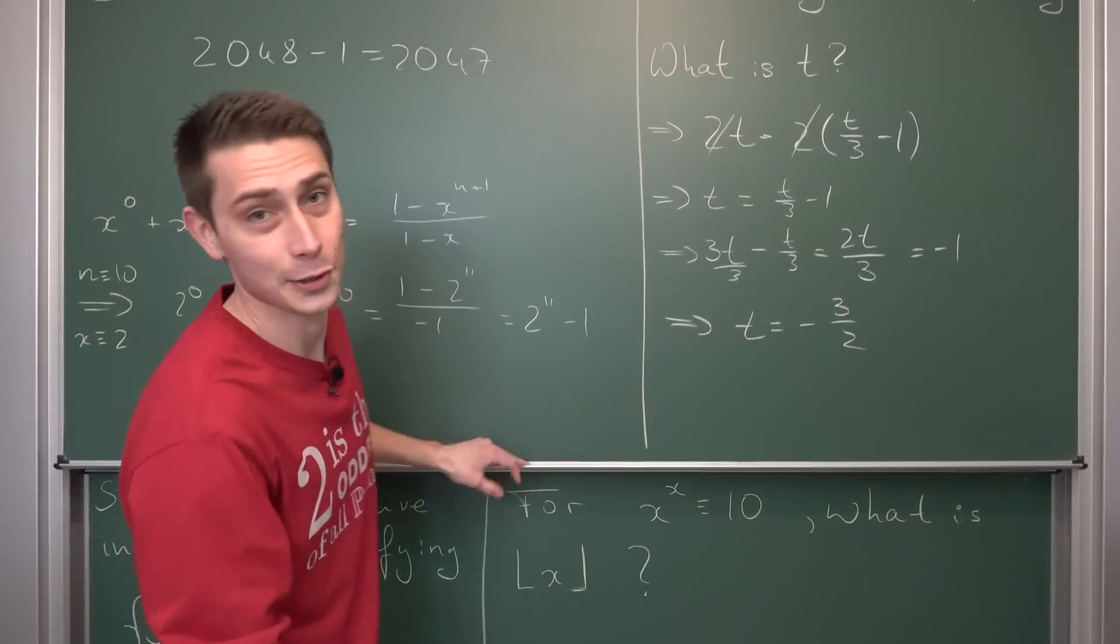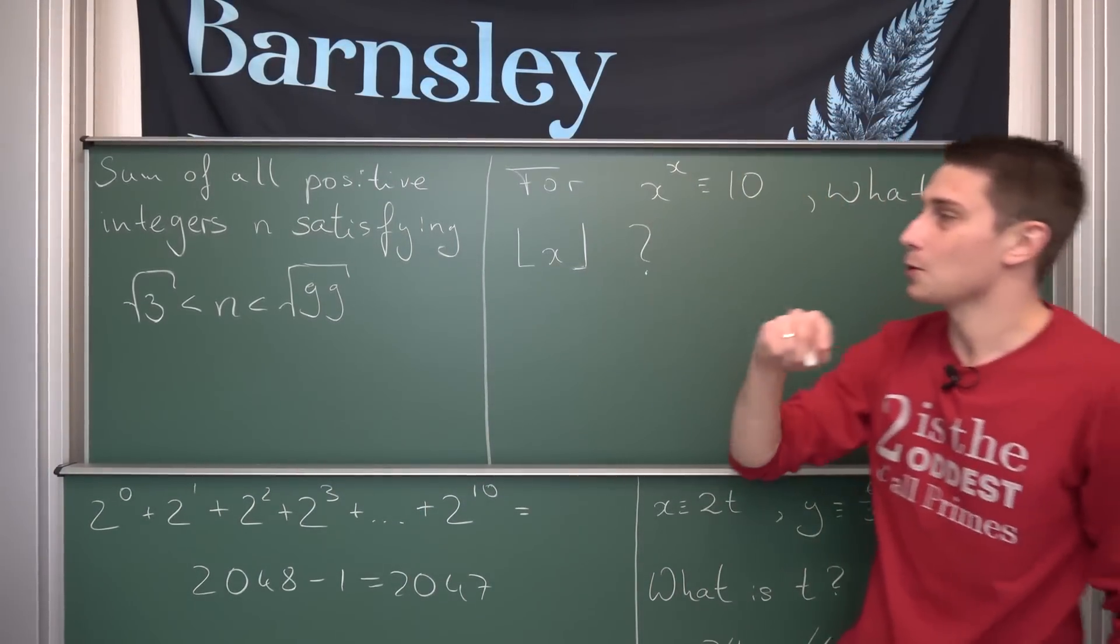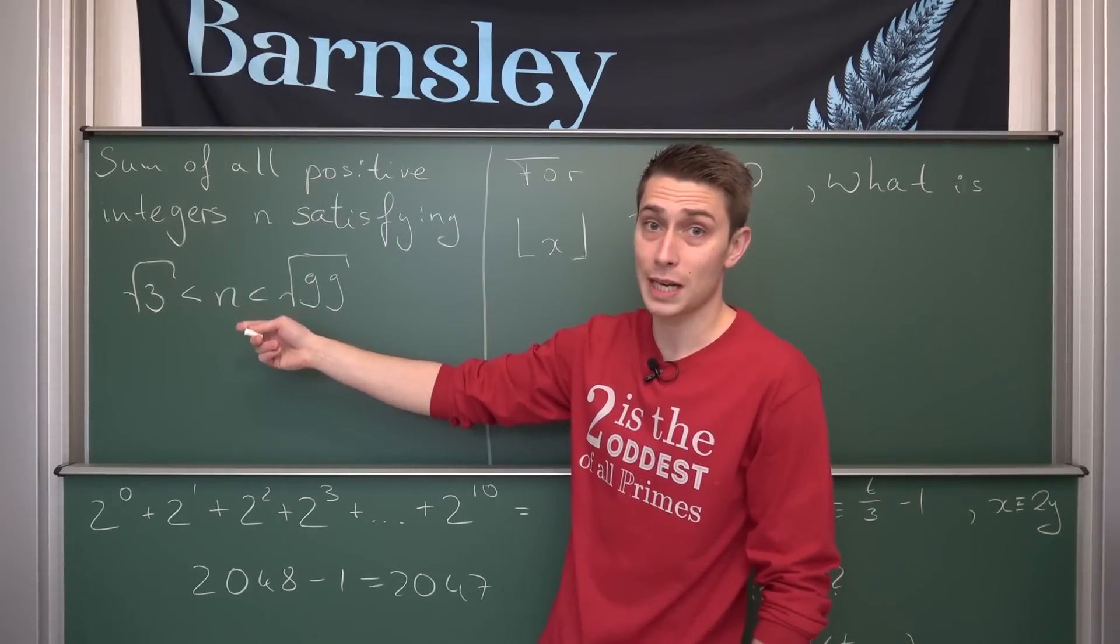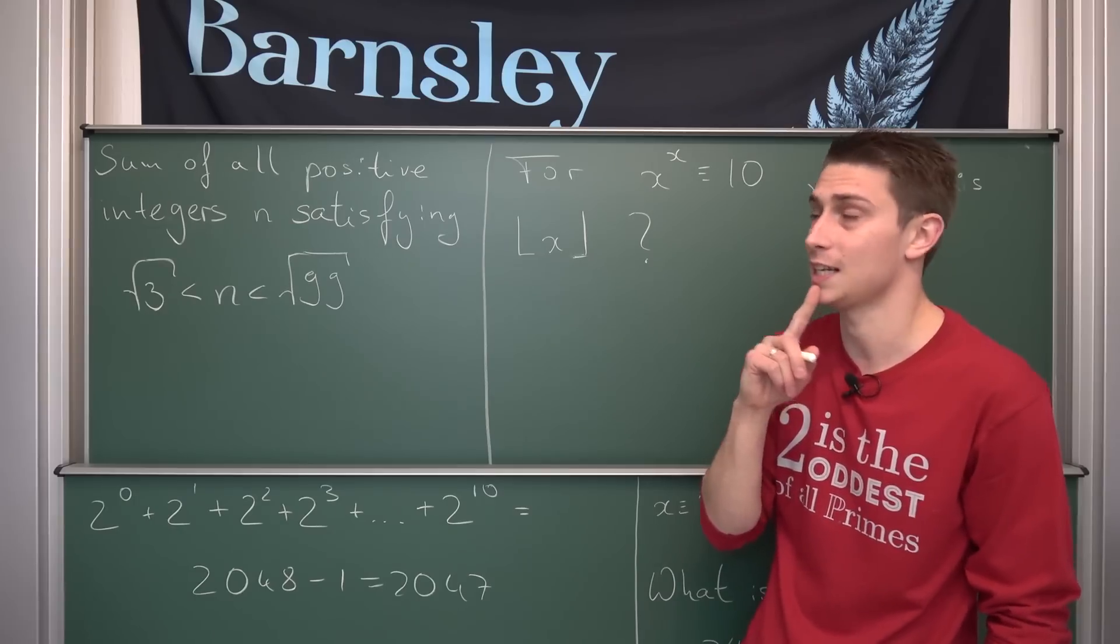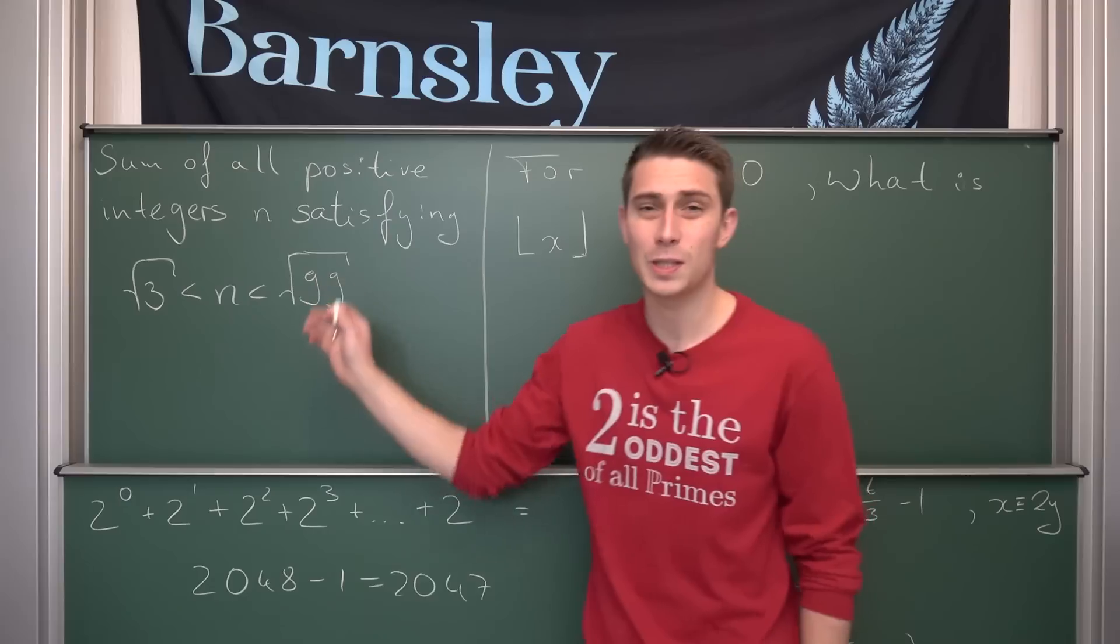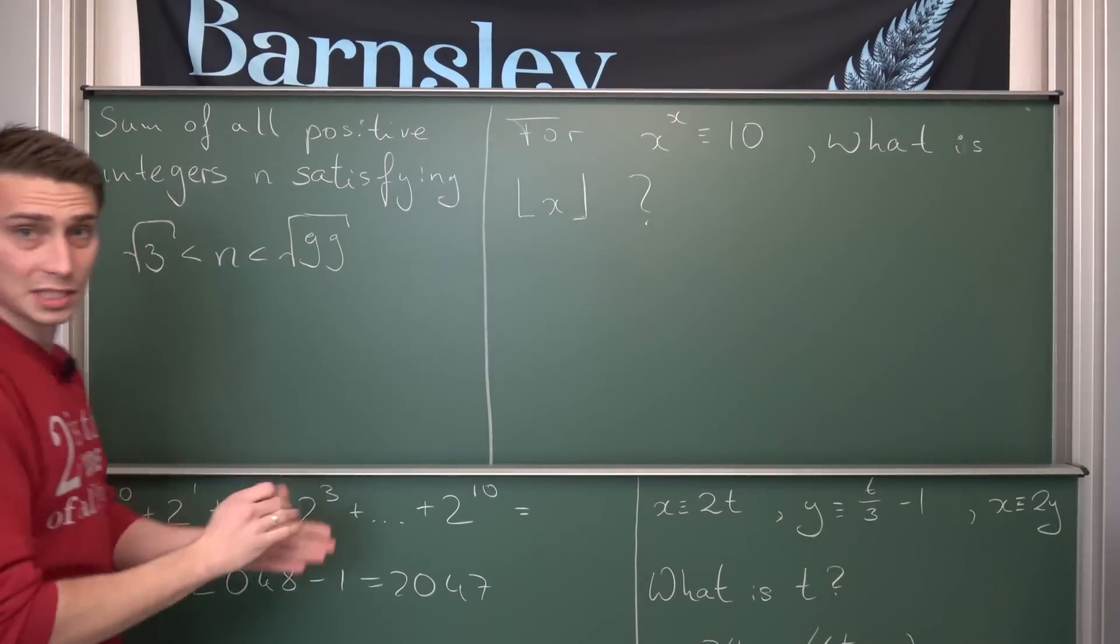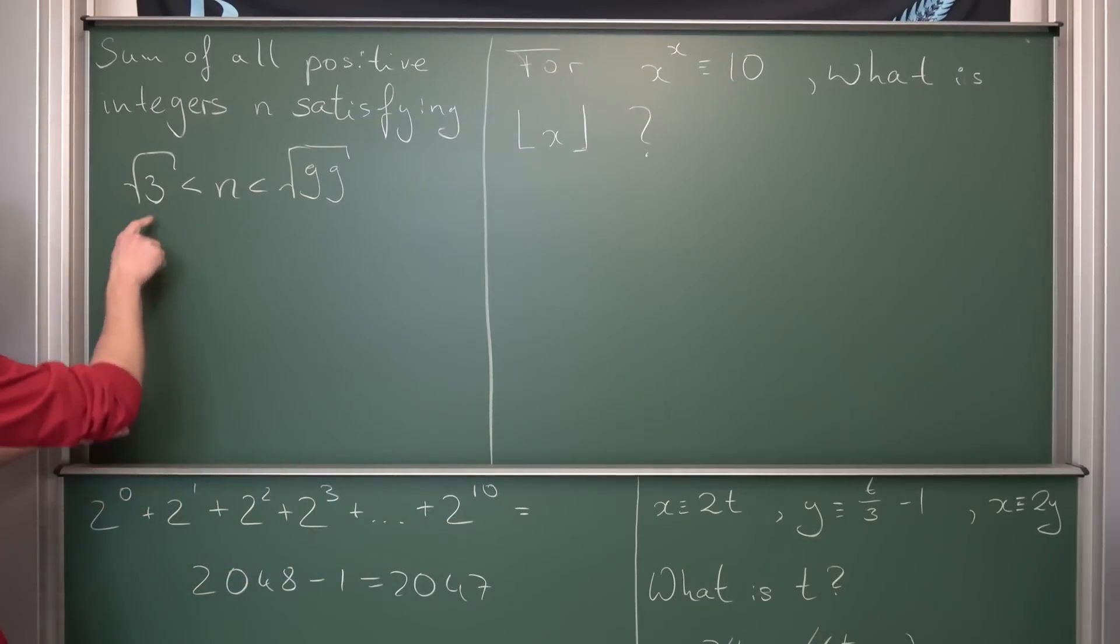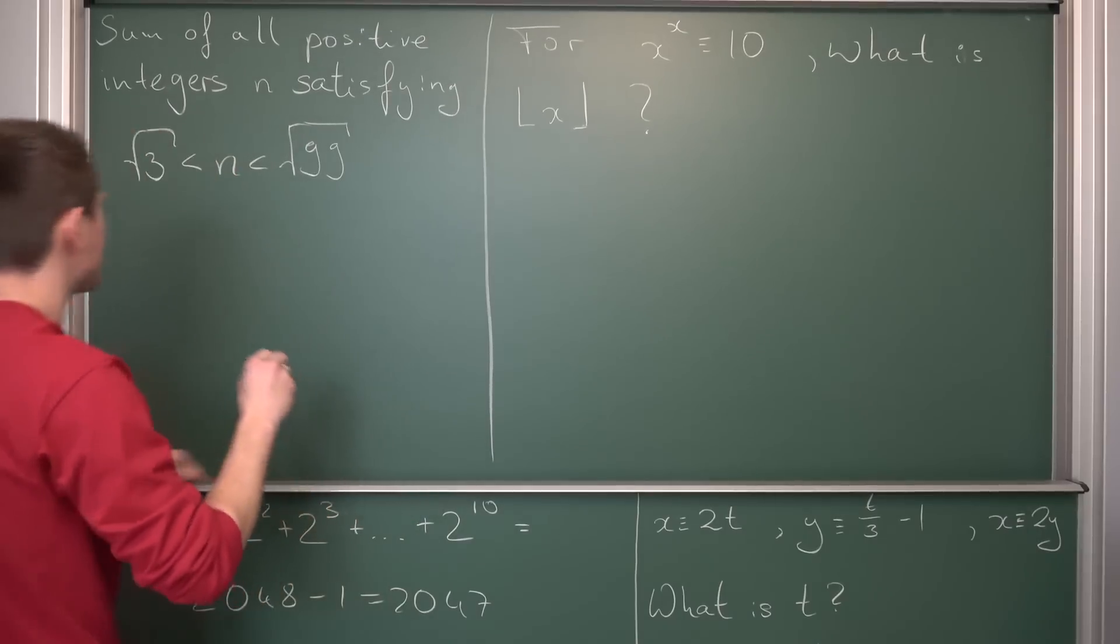You probably got that right too. Now next up, what is the sum of all positive integers n satisfying square root of 3 being less than n being less than square root of 99? So at first we are going to do some argumentations here. We are going to see how our square roots are actually bounded in this problem and n is a positive integer, meaning we need to round stuff up and down in the process.